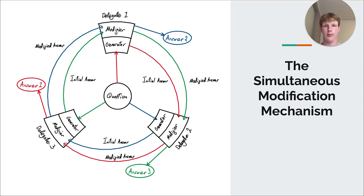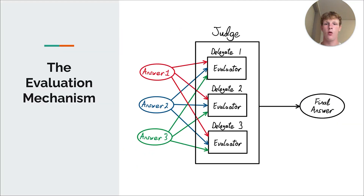How do multiple delegates come together? The simultaneous modification mechanism, illustrated here with three delegates — although you can have as many as you want. A question or prompt is given to the generators of all three delegates, which produce initial answers. These are each passed on to the modifiers of the next delegate in the line, which modify those answers and so on, until every delegate has had an input on every answer. We then use our evaluators to score all three answers and calculate the best final answer.